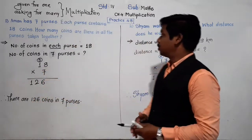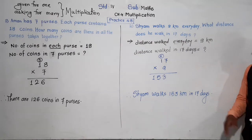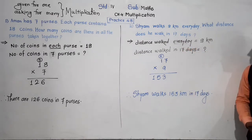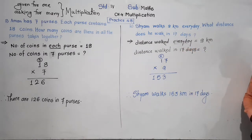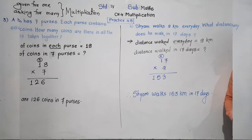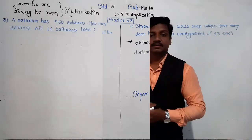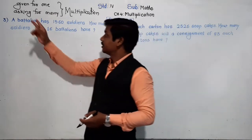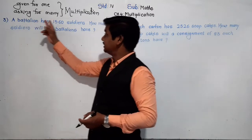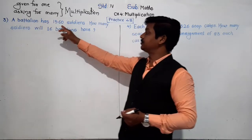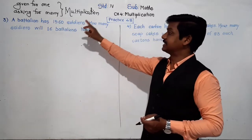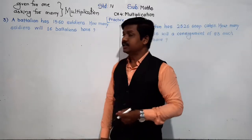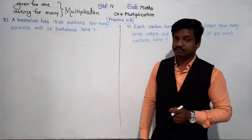Now pause this video and write these two word problems in your notebook. After this we will learn two more word problems. See problem number 3: A battalion has 1560 soldiers. How many soldiers will 16 battalions have?